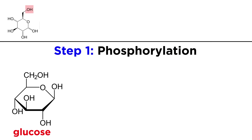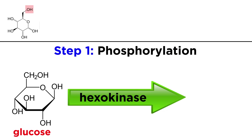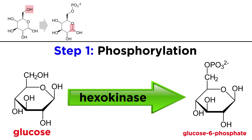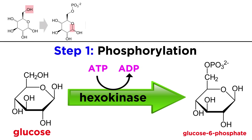First, the hexokinase reaction. The enzyme hexokinase phosphorylates the oxygen on carbon-6 to make glucose-6-phosphate. The polar phosphate group traps the molecule inside the cell, and also reduces the concentration of regular glucose inside the cell, which encourages more glucose to enter by diffusion. This step costs one ATP, which provides the necessary phosphate group for the reaction.